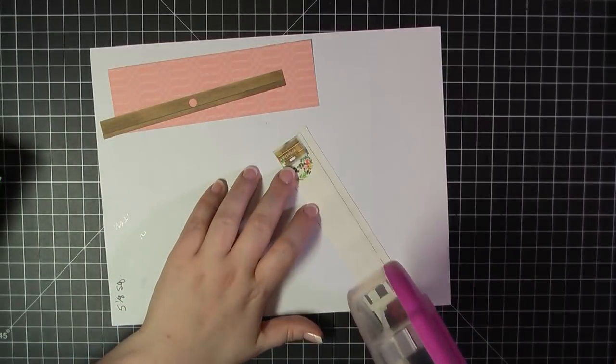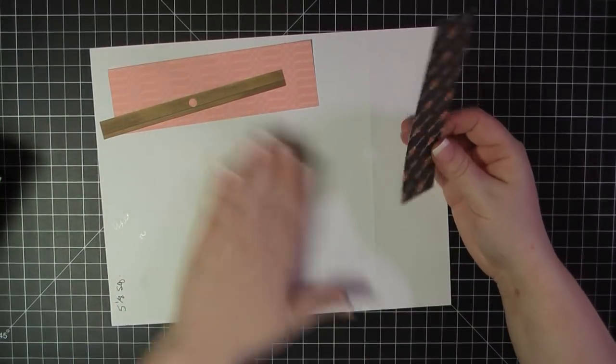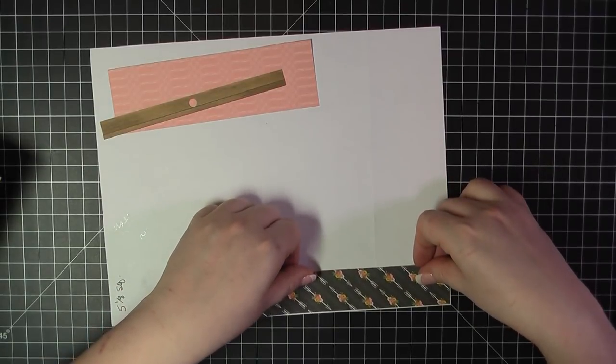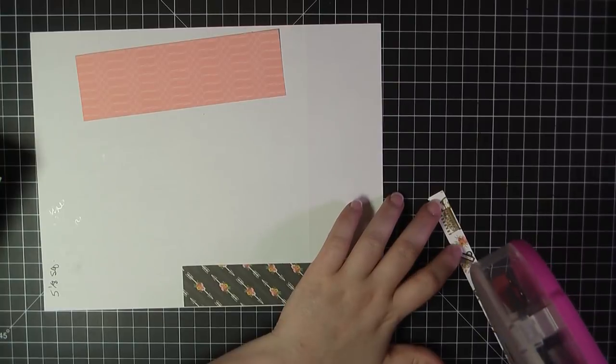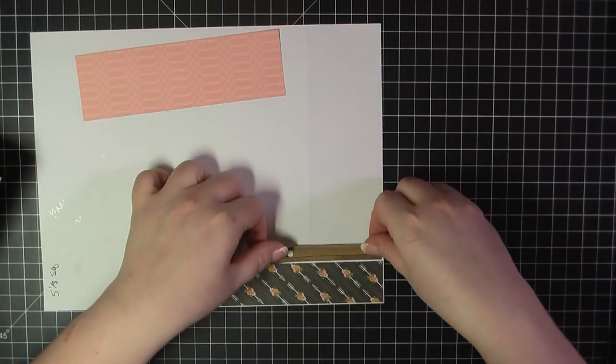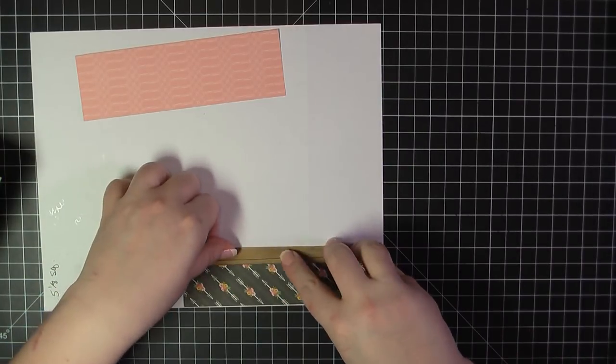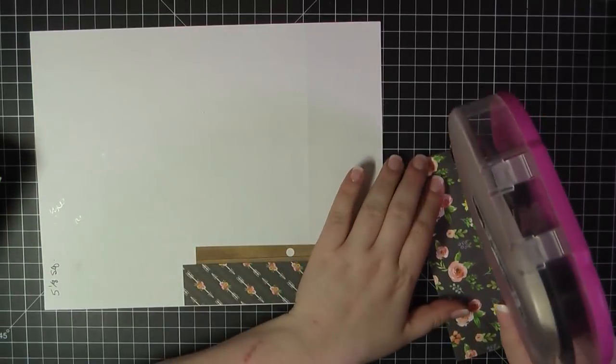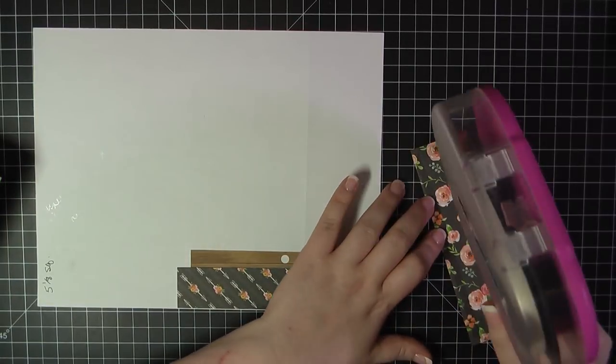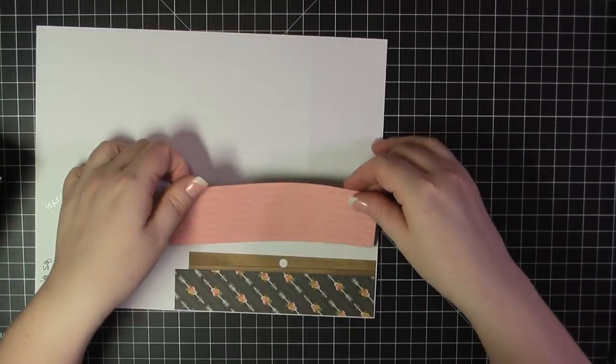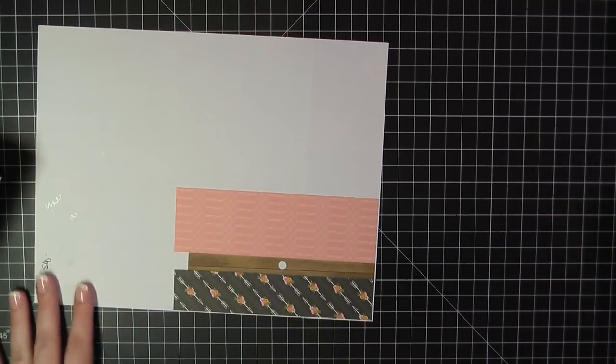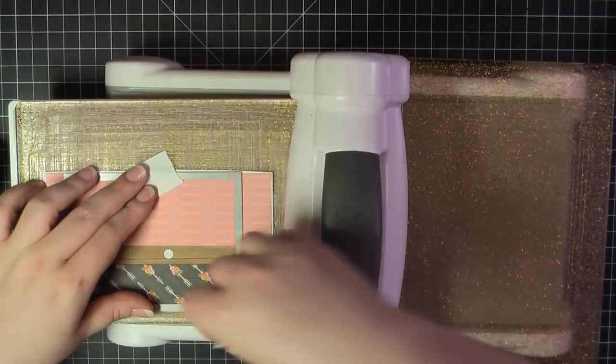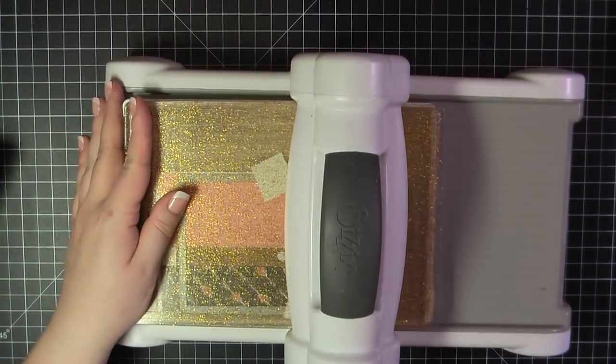Next, I'm going to create a background using some scraps. I've got just regular computer paper here and I'll use my ATG gun to stack these scraps together. I'm going to go ahead and use this top part of one of the papers. Even though it has that hole in it, I know I'm going to position my watercolor paper over top of it. Then I'll trim this out and run it through my Big Shot using one of my Lawn Fawn Stitched Rectangle Dies.